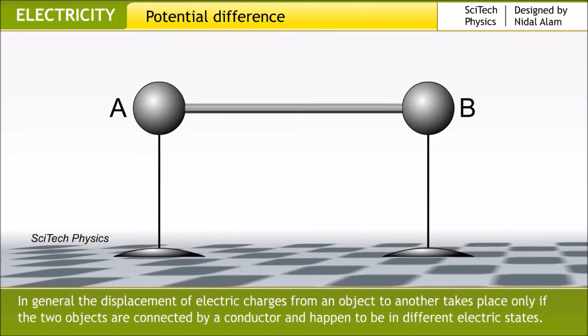In general, the displacement of electric charges from an object to another takes place only if the two objects are connected by a conductor and happen to be in different electric states.